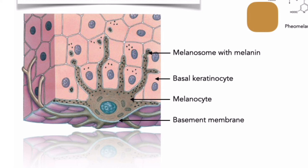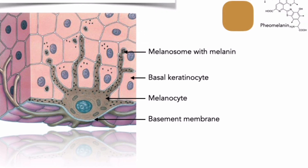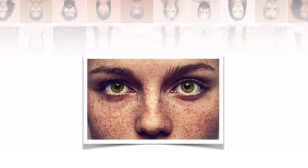Melanocytes manufacture and store melanin within small intracellular vesicles called melanosomes. These vesicles are transferred to the epithelial cells of the stratum basale, coloring the entire epidermis. Melanocyte melanin production is initiated by and slowly increases in response to sunlight exposure, peaking around 10 days after initial exposure. Freckles are small pigmented spots that appear on the skin of pale-skinned individuals, representing areas of greater than average melanin production, most abundant on sun-exposed surfaces such as the face and arms.